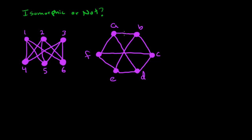Over here, if we count these up, we also get one, two, three, four, five, six, seven, eight, nine edges. So there's nothing immediately obviously wrong with the number of edges or number of vertices. Now we might want to see if there's any sort of similarity in the structure that would make us believe that it's isomorphic or not isomorphic.